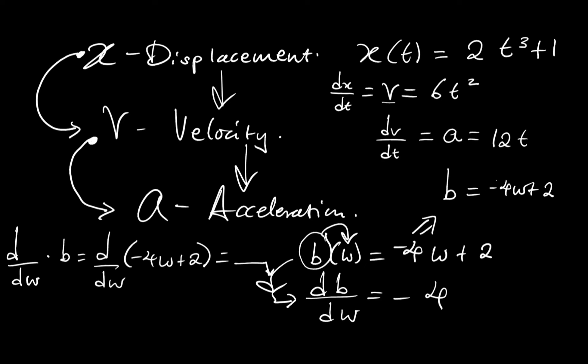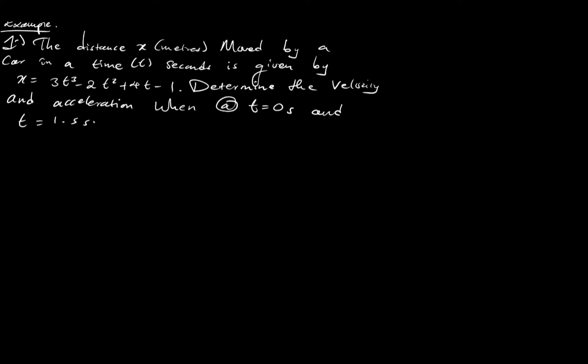This is the concept behind rates of change — understanding how one quantity depends on another and how that rate of change is expressed. Now let's look at an example: we are told that the distance x in meters moved by a car in time t seconds is given by a function, and we need to determine the velocity and acceleration.